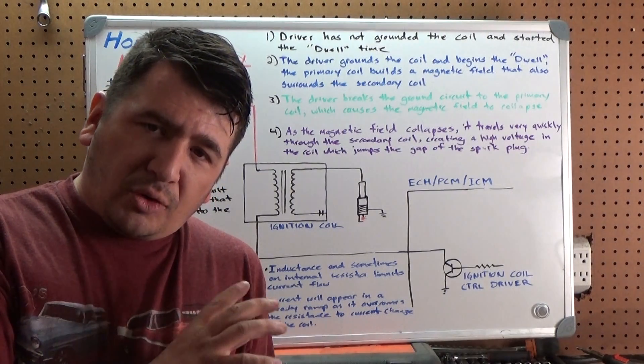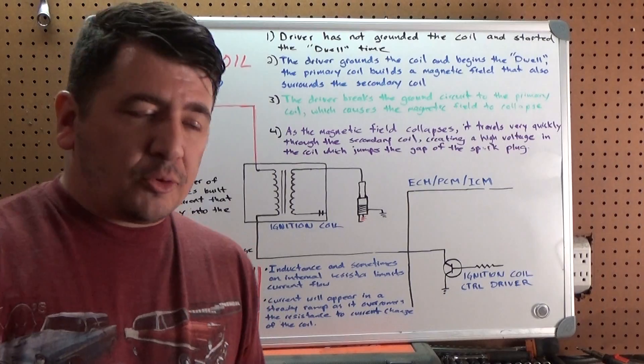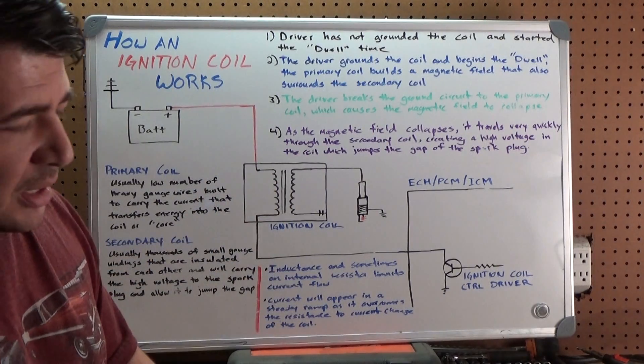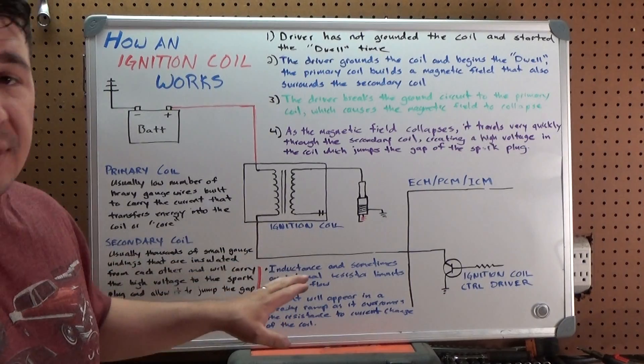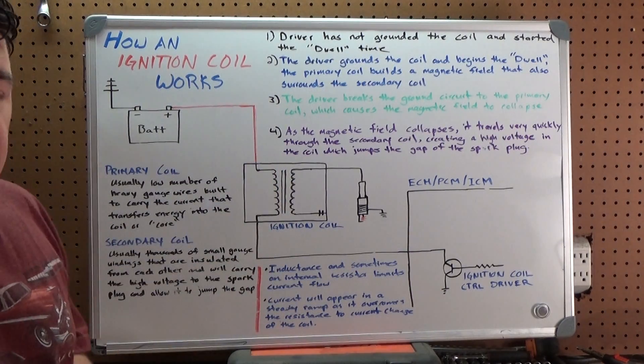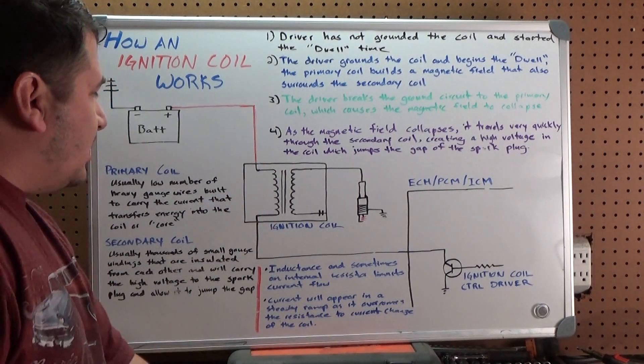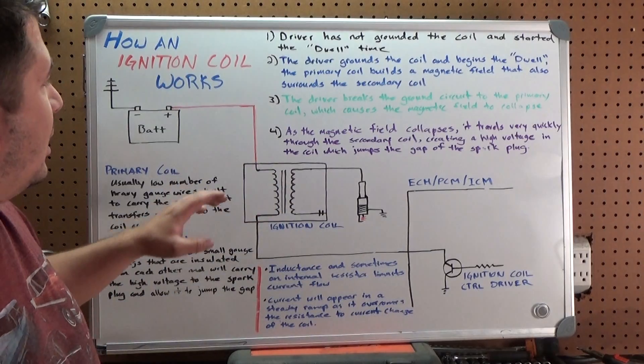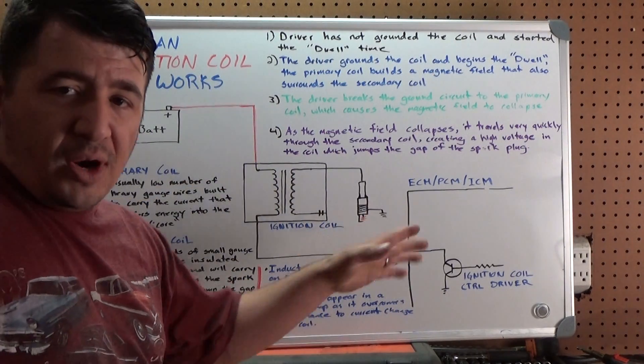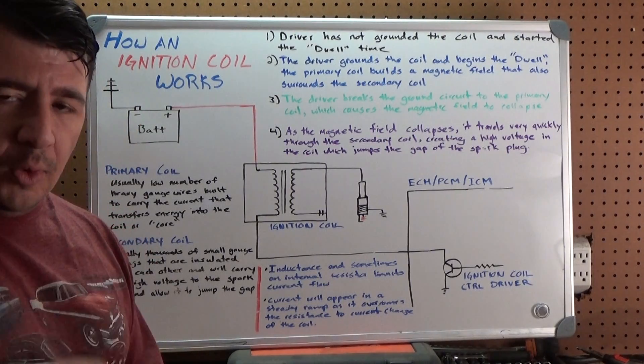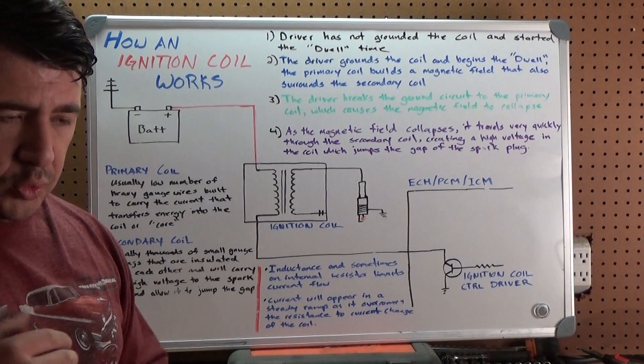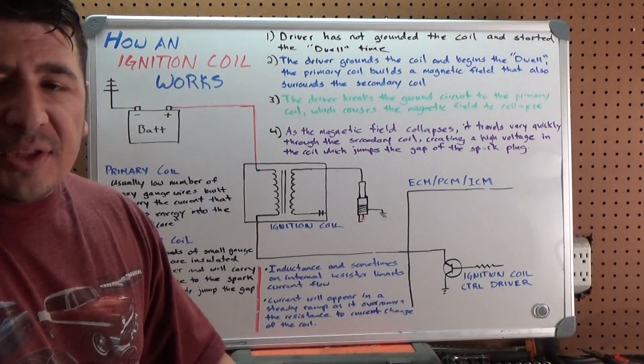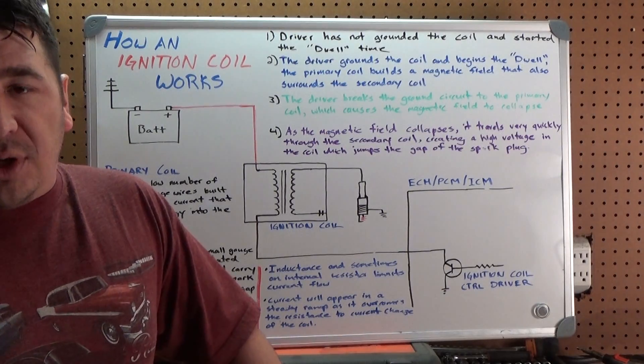Let's take a look at the pieces that are going to be major players in this, and then we'll talk about exactly how they work together. This right here represents how you will typically see an ignition coil represented on a wiring diagram. The side that is connected to your ECM, PCM, ICM, whatever happens to be controlling it, and receives voltage and ground, that is your primary coil. That is the low voltage side that's used to start the process and generate the spark. It's controlled by the computer, and that's where all of the work starts.